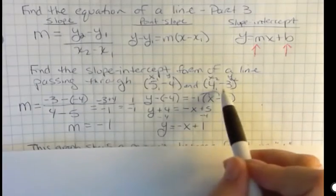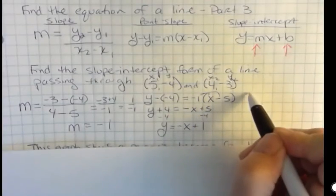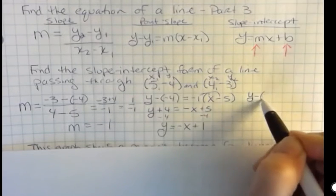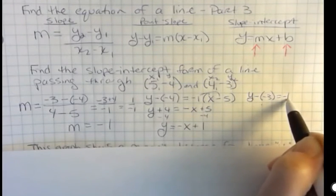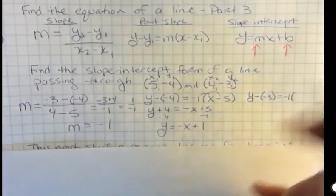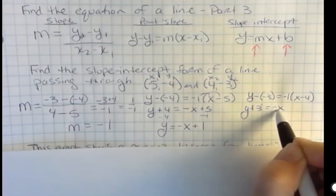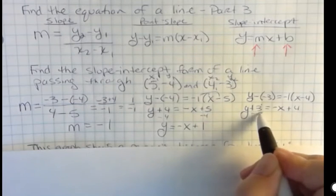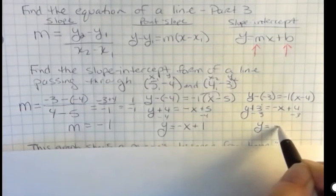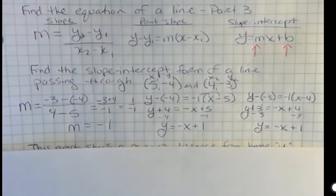But you might say, well what if I chose this point instead of that one? Well let's do this one. So if I say y minus negative 3, my slope is going to be the same, and then I say x minus 4. Well that looks like y plus 3 is negative x plus 4. And if I subtract 3 from both sides, I get y equals negative x plus 1. So you can see that you get the same answer regardless of whether you use the first point or the second point. So you can choose which point you like, and sometimes I do choose which one looks easier to plug in.